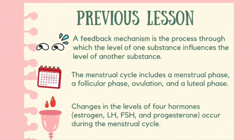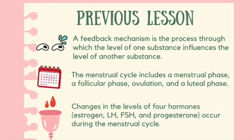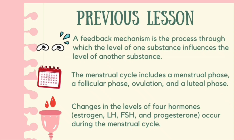In our previous lesson, we learned that a feedback mechanism is the process through which the level of one substance influences the level of another substance. We also discussed that the menstrual cycle includes a menstrual phase, follicular phase, ovulation, and a luteal phase. There are changes in the levels of four hormones — estrogen, LH, FSH, and testosterone — during the menstrual cycle.